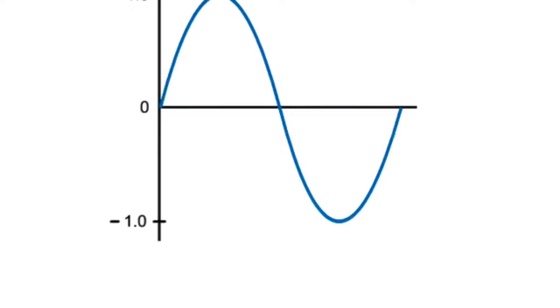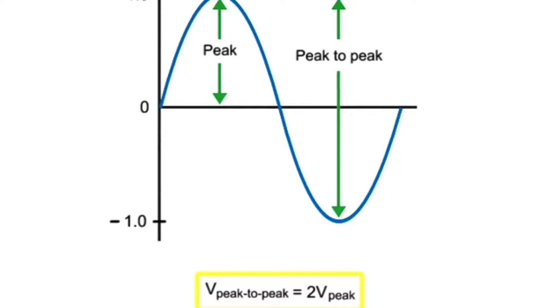The peak-to-peak value is measured from the negative aspect of the waveform to the positive aspect. In symmetrical waveforms, the peak-to-peak value is twice the peak value.